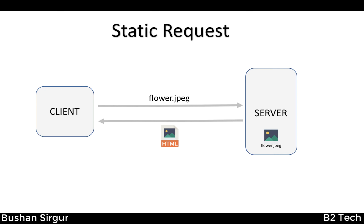This is a static request where the resource exists on the server, and the server finds that resource and sends it back. But there are situations where the resource will not be there on the server and we have to generate that resource at runtime — this is a dynamic request. Let's look at the dynamic request in detail.